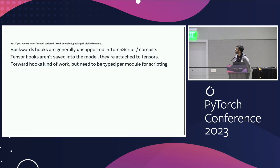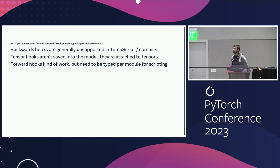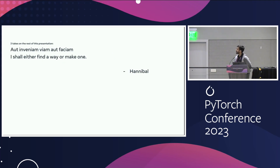If you're not lucky enough to only do pure PyTorch and you're using FX transforms, torch scripting, torch packaging your model and distributing it, or even just pure pickling your model, you run into issues. The biggest one is that backward hooks aren't supported in dot script, and this is one of those things that annoys a lot of people. That's what I'm going to dive into for the rest of this talk.